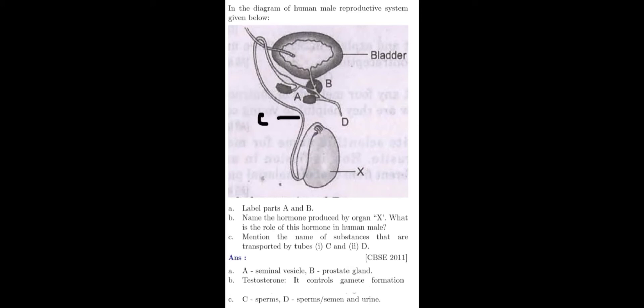Substances transported by tubes C and D. C is vas deferens. It transports sperms. And the D is the urethra, which is a common passage for both semen and urine.